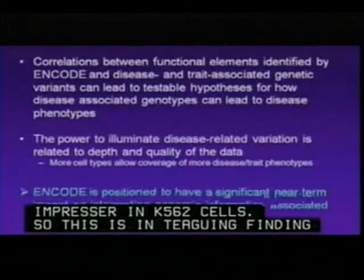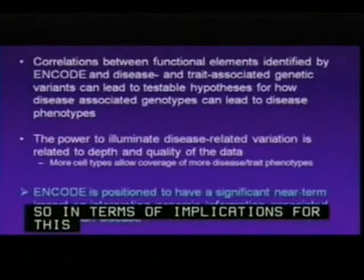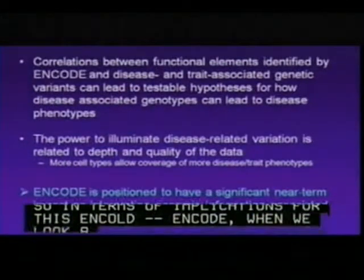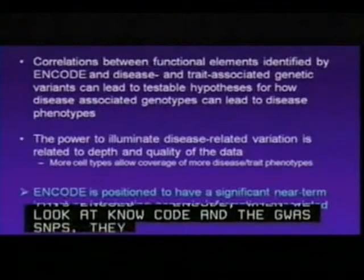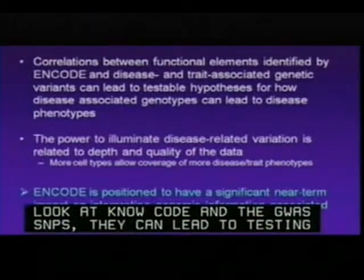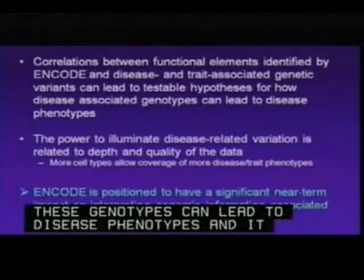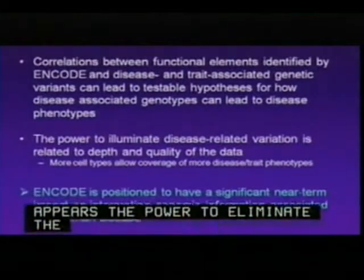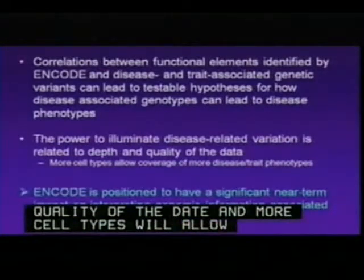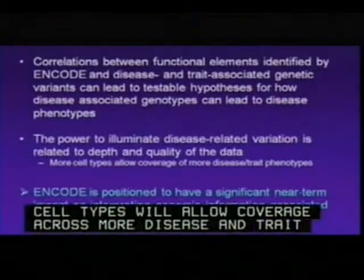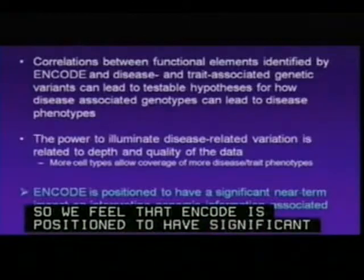In terms of implications for ENCODE: when we look at correlations between functional elements identified by ENCODE and GWAS SNPs, we feel they can lead to testable hypotheses for how disease-associated genotypes lead to disease phenotypes. The power to illuminate disease-related variation is related to the depth and quality of the data, and more cell types will allow coverage across more disease and trait phenotypes. We feel ENCODE is positioned to have a significant impact on interpreting genomic information associated with human disease.